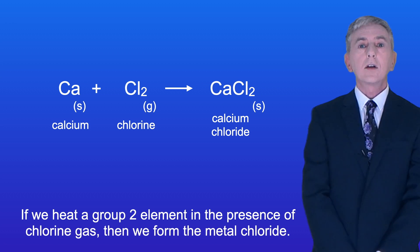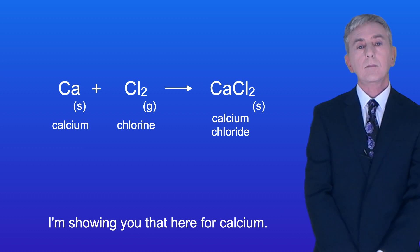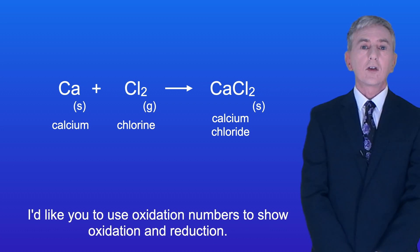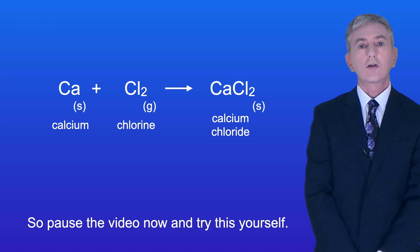Okay now if we heat a group 2 element in the presence of chlorine gas then we form the metal chloride and I'm showing you that here for calcium. I'd like you to use oxidation numbers to show oxidation and reduction so pause the video now and try this yourself.